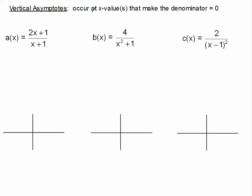These vertical asymptotes occur at x values that make the denominator equal to 0. So it's pretty simple to find a vertical asymptote. All you have to do is set the denominator of your rational function equal to 0 and solve that equation. This equation is not very difficult — we would just subtract 1, and we'd get our vertical asymptote, labeled VA: x equals negative 1.